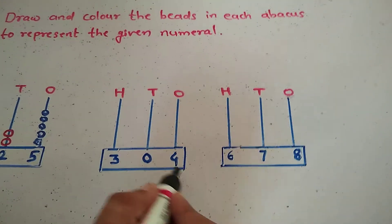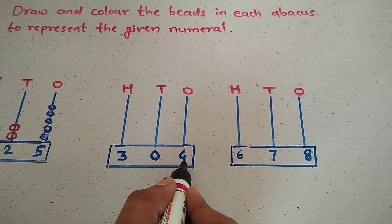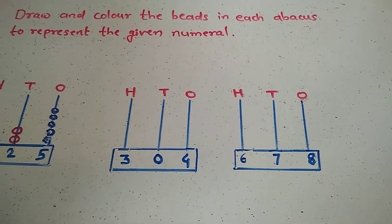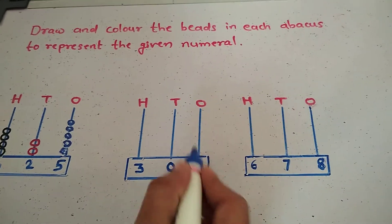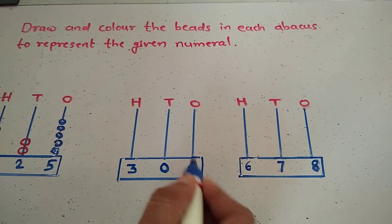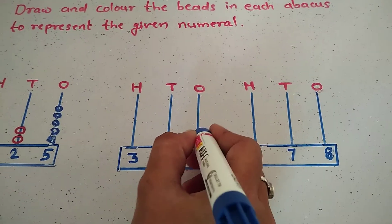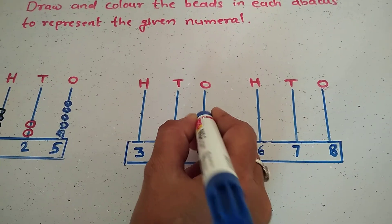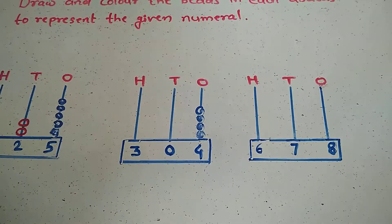Which number is in the ones place? Four. How many beads are drawn there? Four. Right: one, two, three, four.